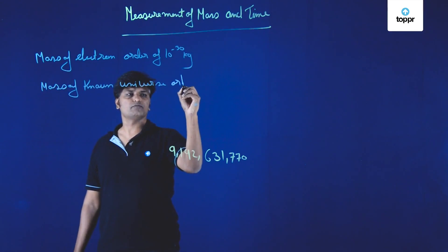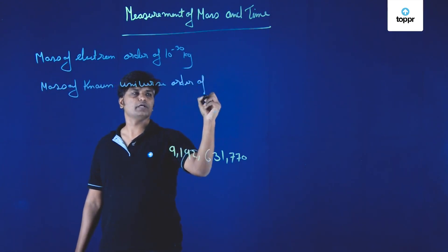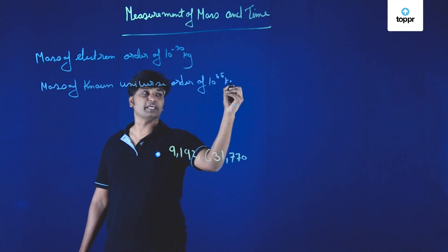So that means this is how the mass can vary from 10 raised to minus 30 kg to 10 raised to 55 kg, which is the mass of the known universe.